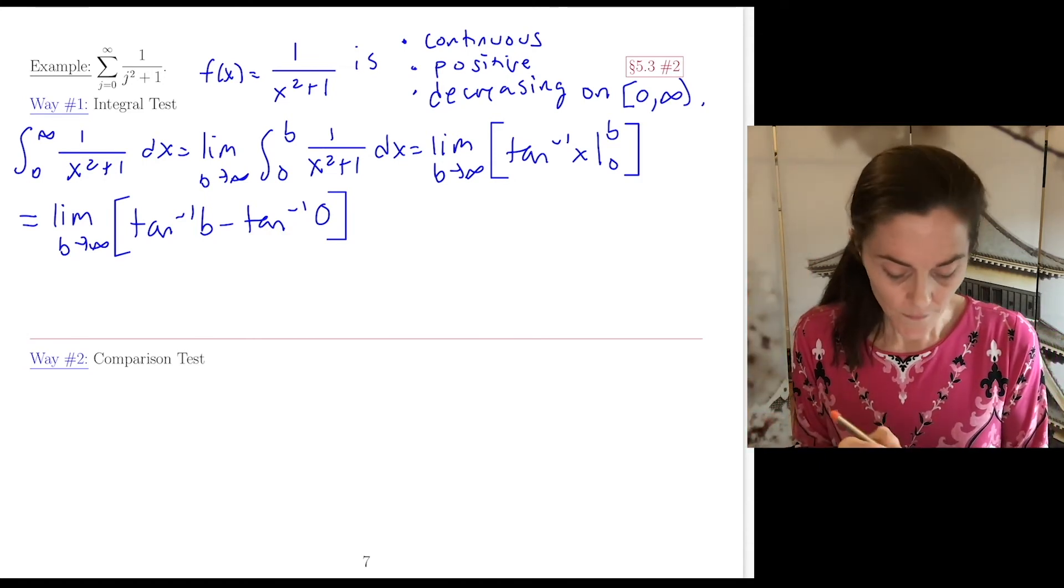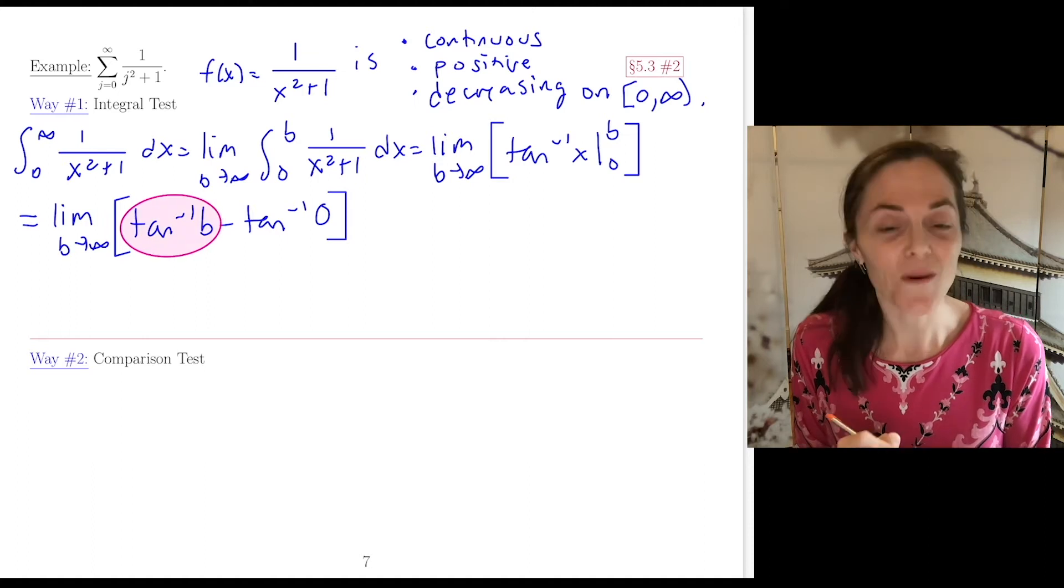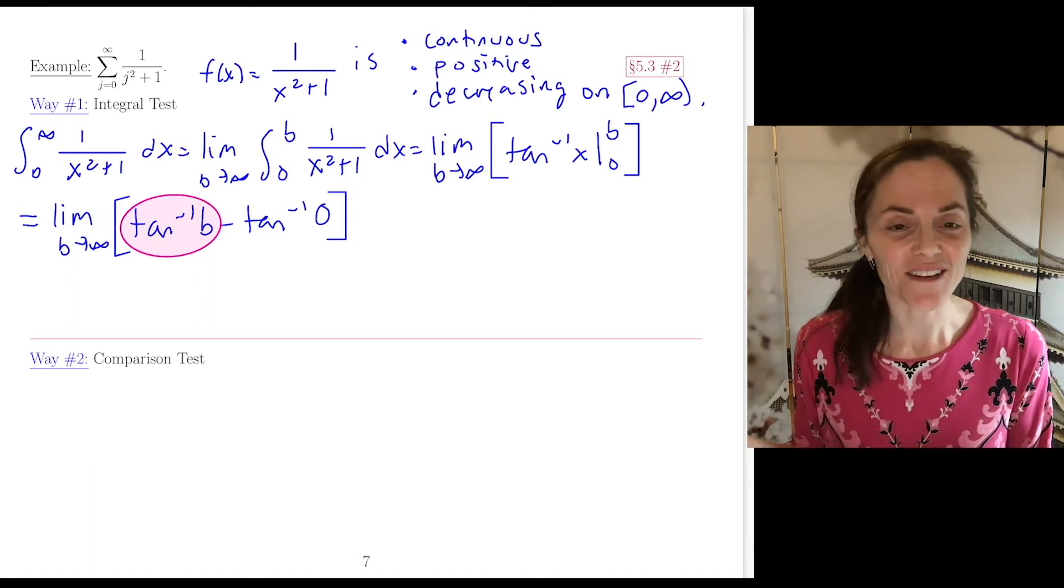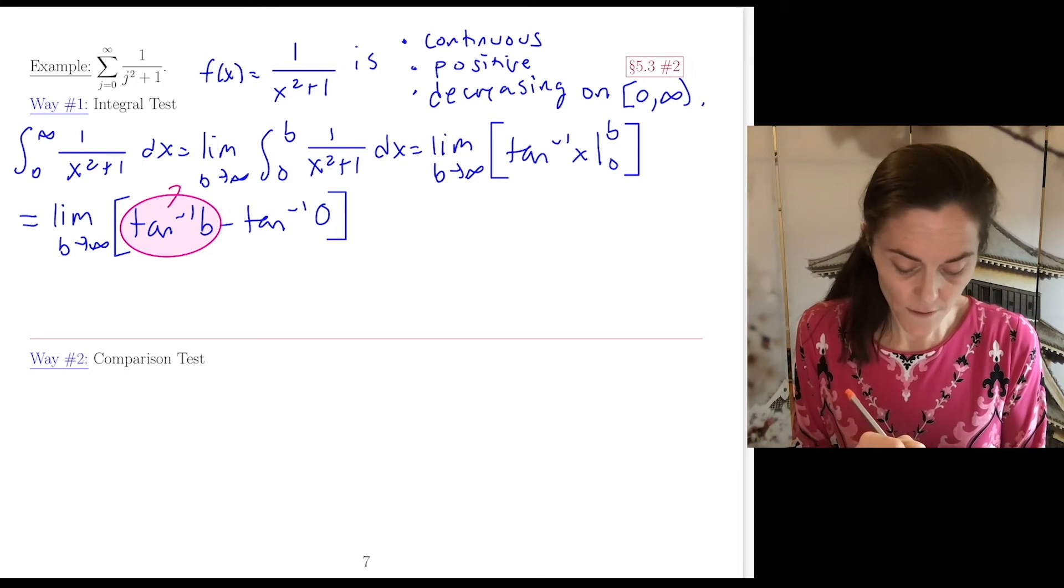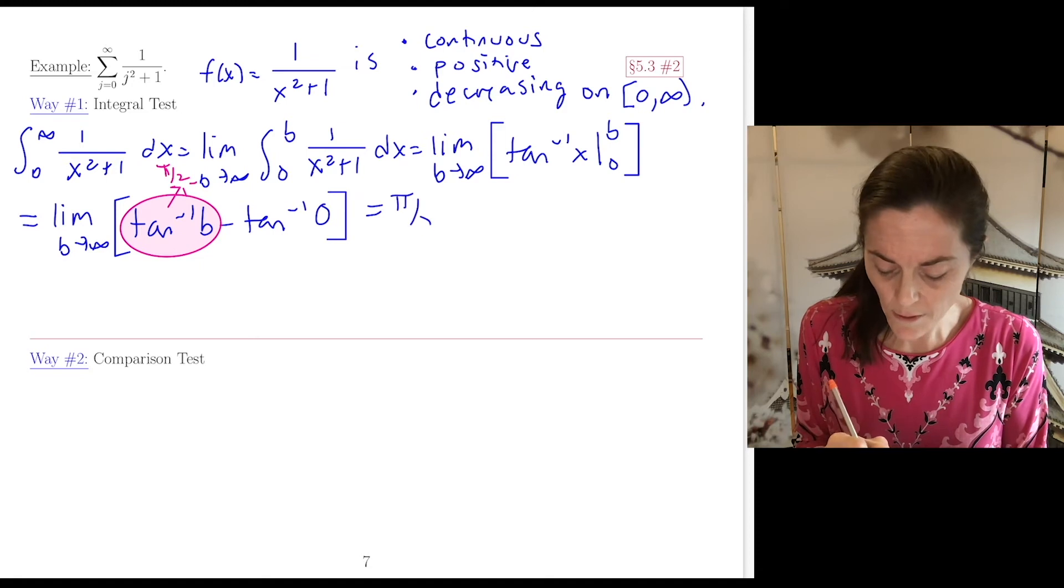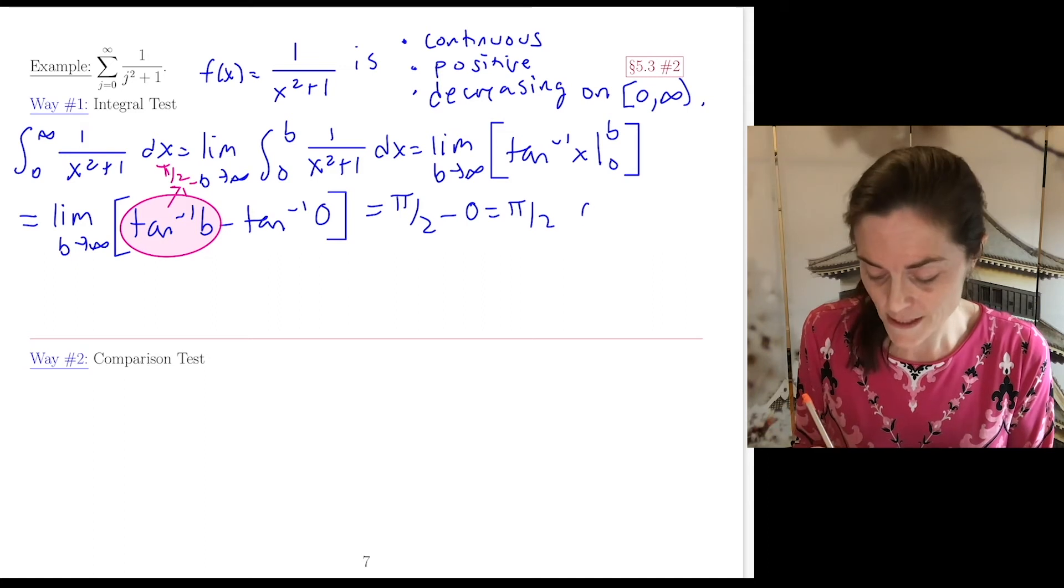This limit comes up often in calculus 2. The limit of tan⁻¹(b) as b approaches infinity is π/2. So this is π/2 - 0 = π/2. This improper integral converges.